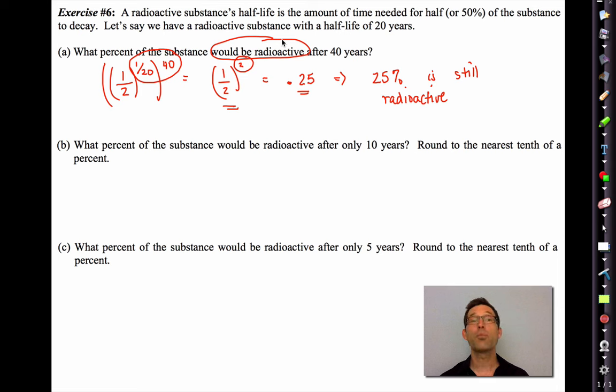Letter B. What percent of the substance would be radioactive after only 10 years? Round to the nearest tenth of a percent. Now again, a lot of people might say, that should be 75%. I mean, after 20 years, we're going to have 50%. So after only half that time, 10 years maybe like 75% radioactive. But again, it just doesn't work out that way. One-half to the one-twentieth gives us what we have on a yearly basis. Raised to the tenth now.